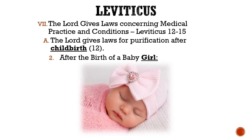At the end of her purification period, for either a boy or a girl, she was to bring an offering to the Lord of a one-year-old lamb and a young turtle dove or pigeon. However, if she was poor, then she could bring two turtle doves or two pigeons.